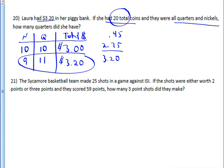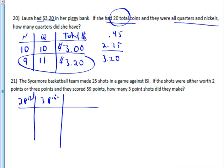The Sycamore basketball team made 25 shots in a game against ISI. If the shots were either worth 2 points or 3 points and they scored 59 points, how many 3-point shots did they make? Same as the previous problem, except you're going to have 2-pointers and 3-pointers, and we want a total amount equal to 59, and we need to add up to get 25 shots.